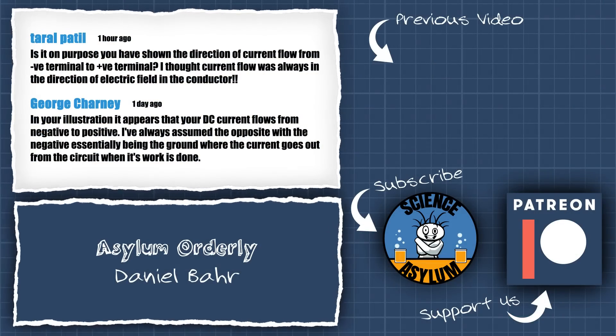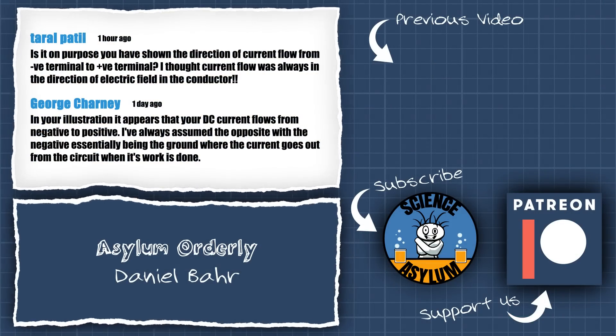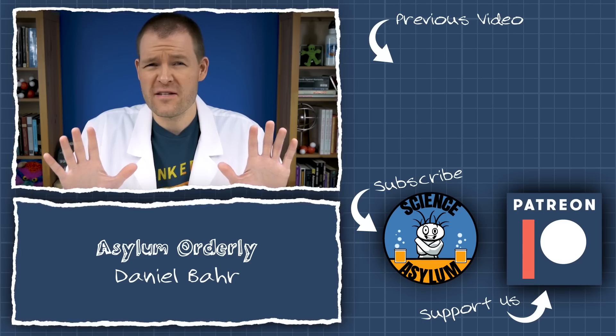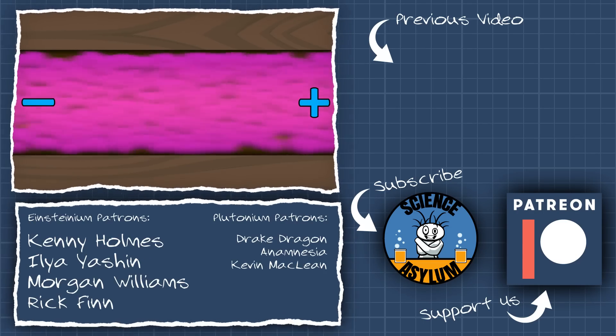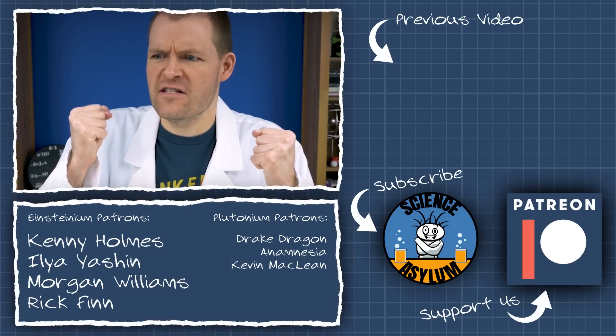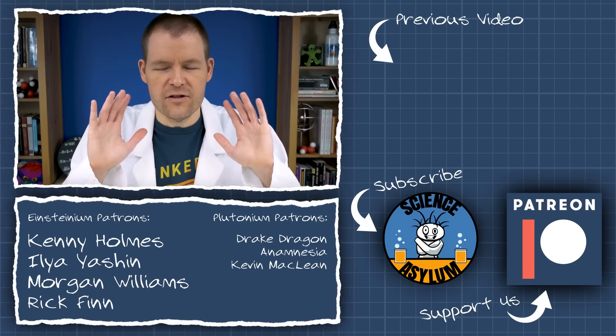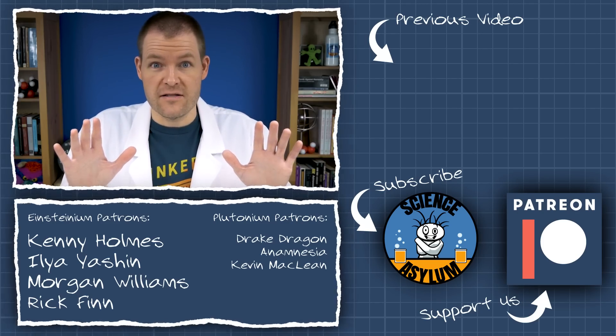Tural Patil and George Charney pointed out that my current was going the wrong way. That's not actually true because I wasn't ever showing the current. I was showing the direction of electron flow, which is opposite the current. Ben Franklin made everything so complicated. Anyway, I'll address this in more detail when we get to circuits. Thanks for watching!